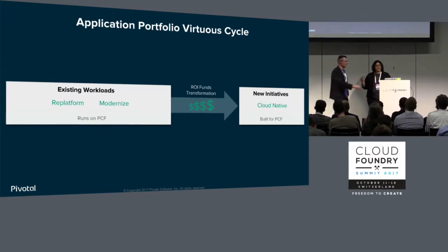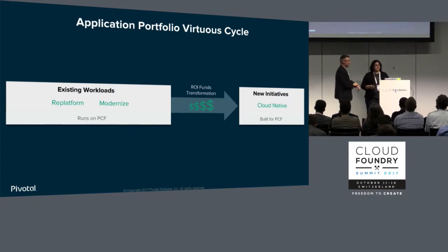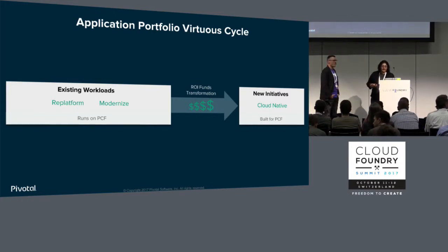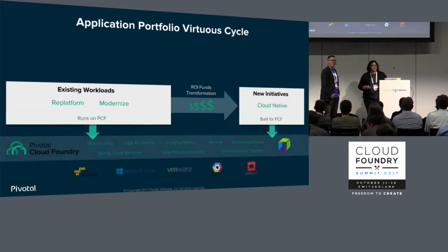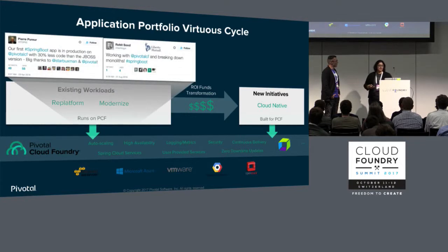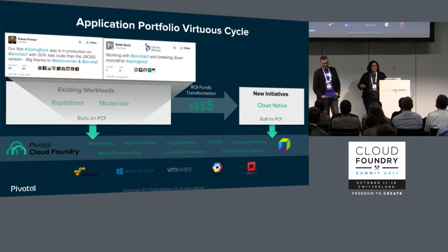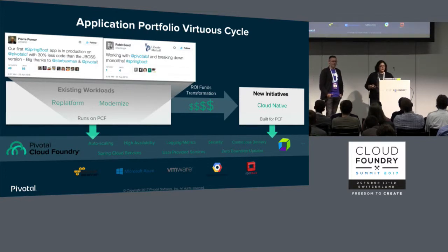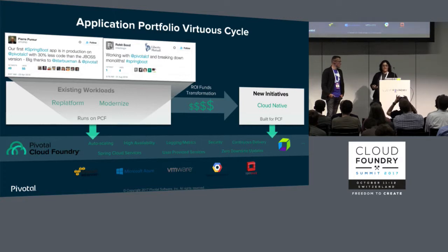It is possible and actually relatively easy to move new workloads onto Cloud Foundry. If you do them well enough and show ROI well enough, the funds you save can actually fund new initiatives within Cloud Foundry. Tools within the platform itself make it much easier to run your newly replatformed applications. Use technologies like Spring Boot and Spring Cloud Services — you get 30% less code than JBoss — and use it to transform your enterprise to delivering code and features to customers quickly.